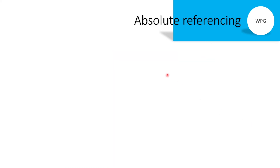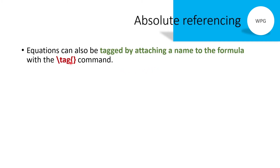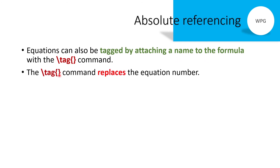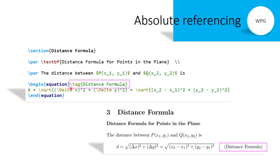The equation number can be replaced by the equation name — this is called absolute referencing. Absolute referencing means giving the equation a name by attaching it to the formula using the \tag command. The \tag command replaces the equation number. After the \begin{equation} environment, in place of \label, write the \tag command and inside it write the name of the equation — here it is 'Distance Formula'.